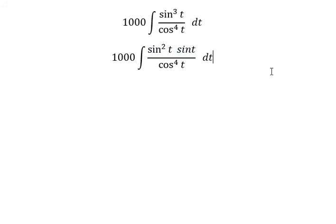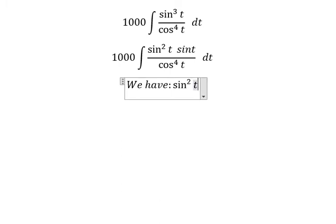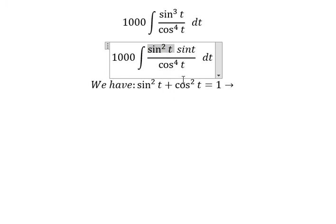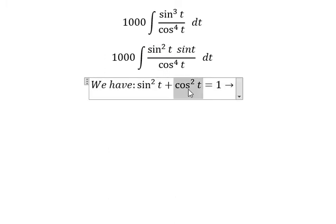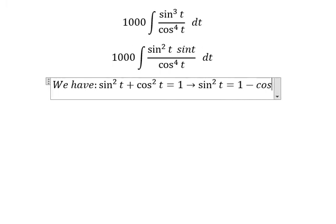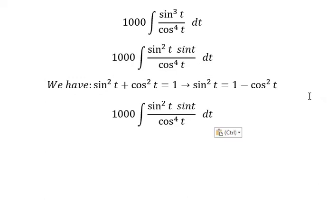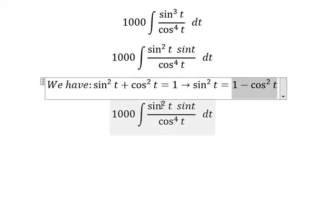Now we have the formula: sin²(t) + cos²(t) = 1. Because we have sin²(t) here, I can move cos²(t) to the right side, so sin²(t) = 1 - cos²(t). I will substitute this expression in here.